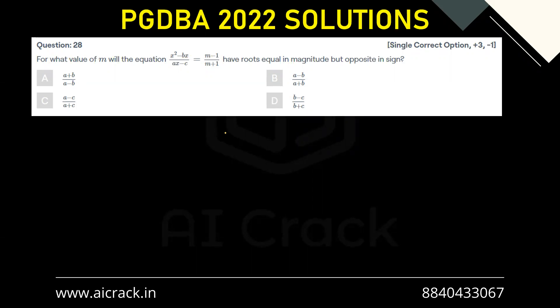So let's say I have a quadratic equation ax² + bx + c = 0. Now if the roots are equal in magnitude but opposite in sign, basically the summation of roots would be 0.